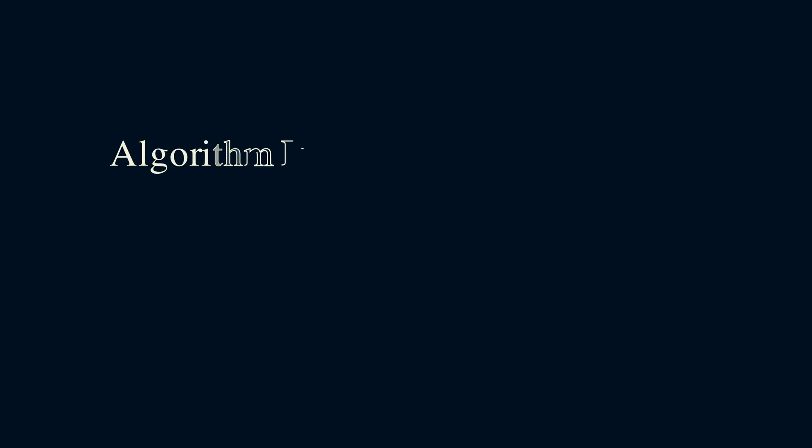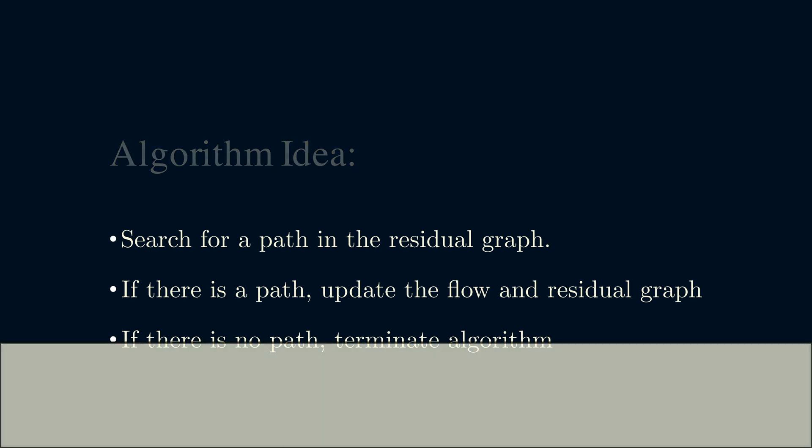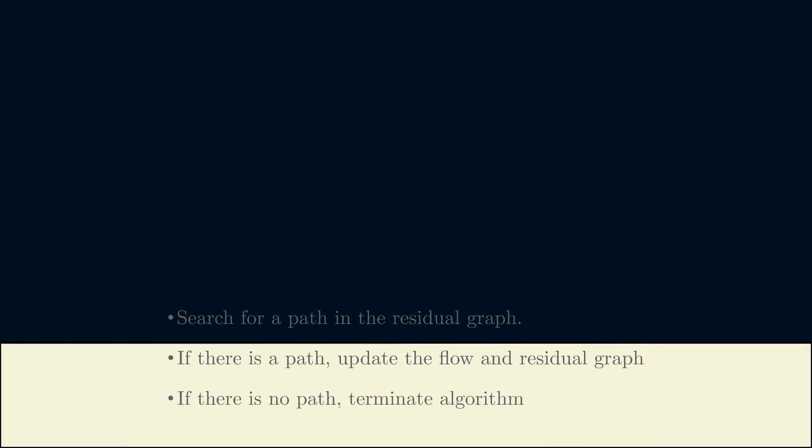Now let's apply what we just learned to come up with an algorithm. We know that a path in the residual graph lets us increase the flow, so let's search for one. If there is a path, we update the flow and then compute a new residual graph. Then we try to search for another path. If there is no path, we terminate. So this simple algorithm does work, and it has a name. It's called Ford-Fulkerson.